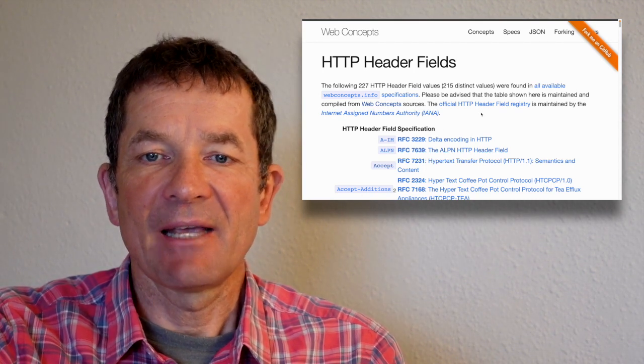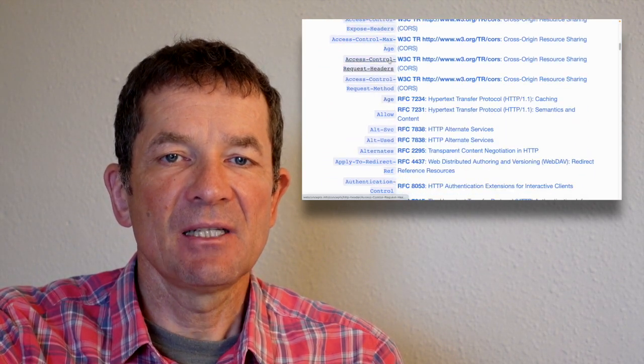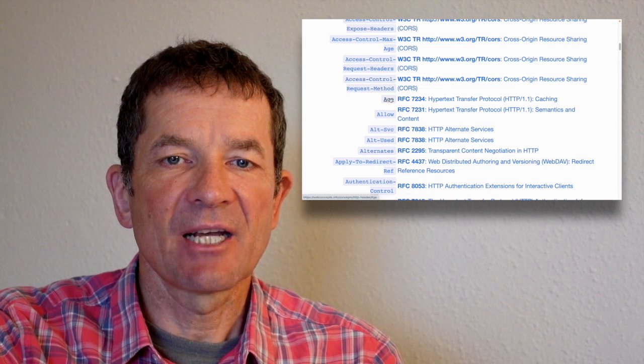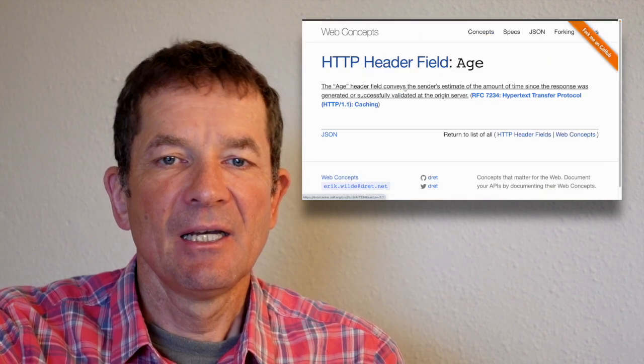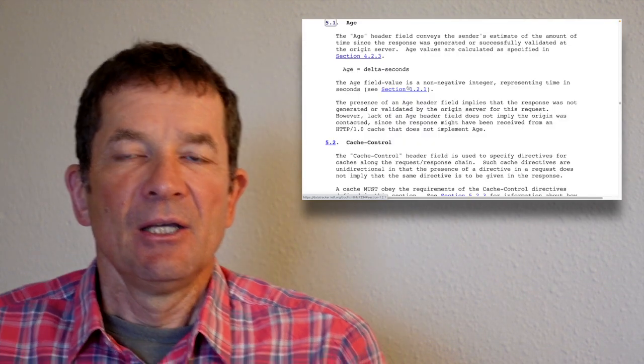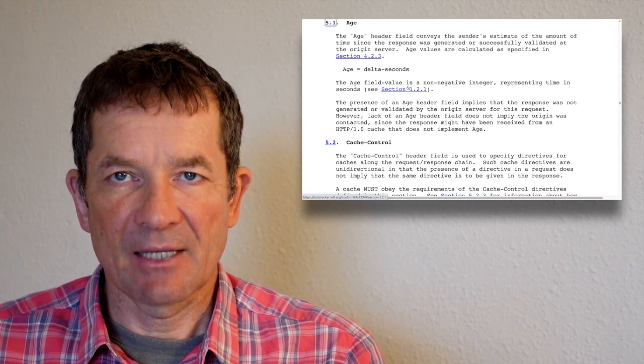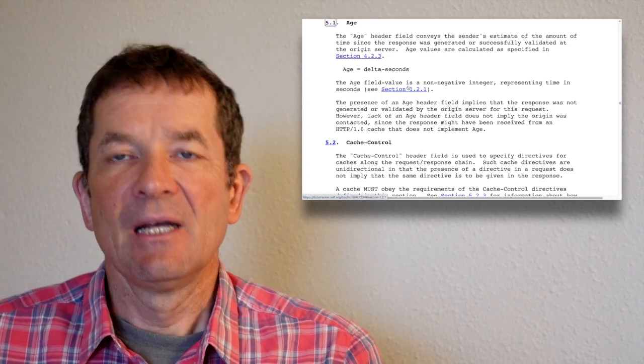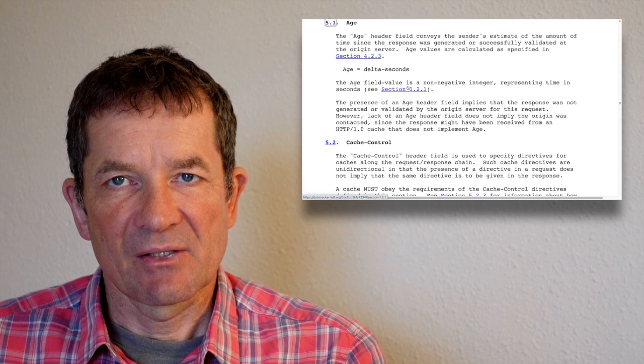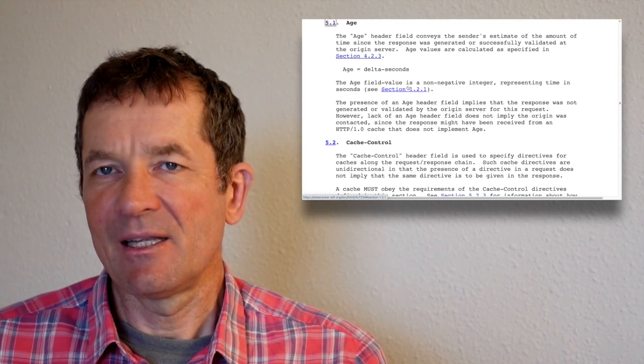Let's look at a very simple example, and a simple example is something, for example, like the age header field. So there is an age header field defined here, and when you look at the definition of it in the specification, you will see that the age header field is just a number of seconds. So it's just an integer that is really easy to process. So maybe in that case you're thinking, why would I need any additional help with that?